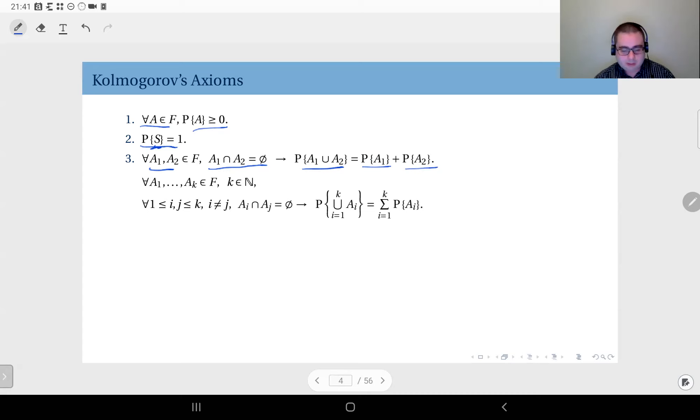This is rule number three. Now this is the special case, and we can generalize this to k events that are pairwise disjoint. If i is different than j, Ai and Aj share no common elements, so all of them—A1 through Ak—are pairwise disjoint. This implies the probability of the union of these k events will be equal to the sum of the individual probabilities. These are the founding axioms of probability theory in general, and from these we can also reach some corollaries.